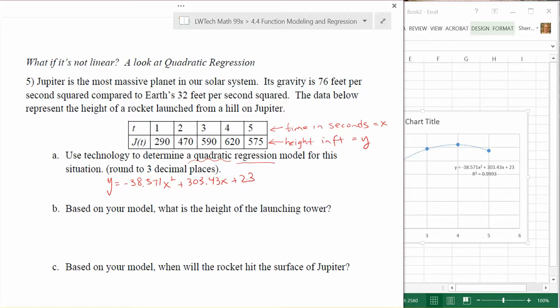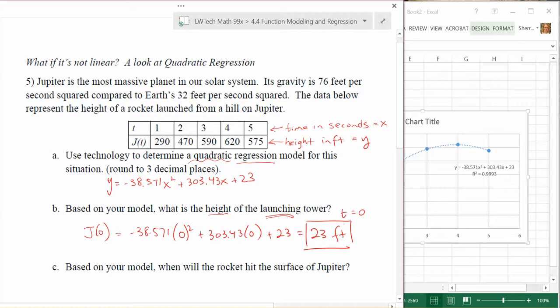Part B says, based on our model, what is the height of the launching tower? Seems like a strange question up front. We're looking for a height, an output. If we're looking for the launching tower, we need to think about where would we be. When we launch the rocket, it's at the very beginning of our measurement, so we're looking at t equals zero. If we want to find the height of the launching tower, we can find it by plugging zero into our quadratic model. Negative 38.571 times 0 squared, that's gone. Plus 303.43 times 0, that's gone too. Plus 23. We end up with 23 feet for our launching tower. This correlates with the vertical intercept of our quadratic function. That would be where the rocket launched from.